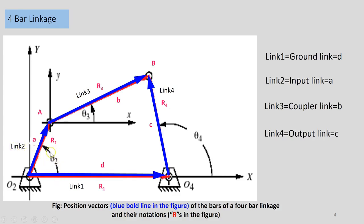The angles corresponding to the links are denoted using the link notation. For example, theta 2 is the corresponding angle for link 2, theta 3 for link 3, and theta 4 for link 4. Link 1 has angle theta 1 equals 0, which is why it is a horizontal line. All angles in this video tutorial series will be measured according to the right-hand rule, meaning all angles will be counterclockwise. Theta 2, theta 3, and theta 4 are all measured counterclockwise.